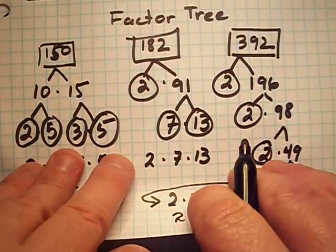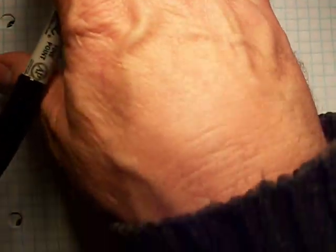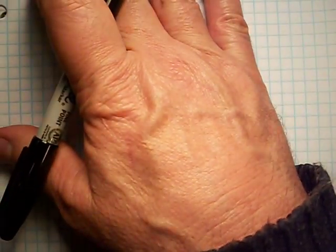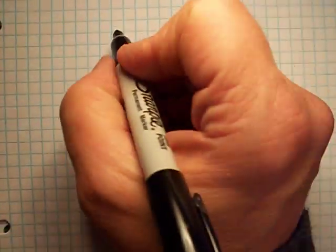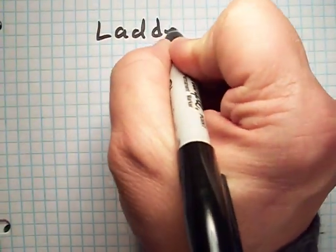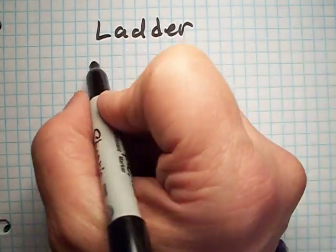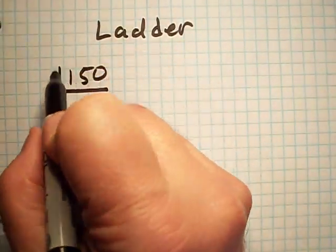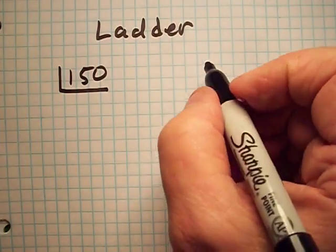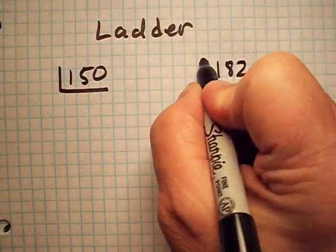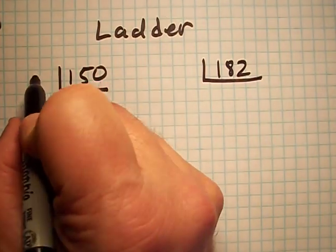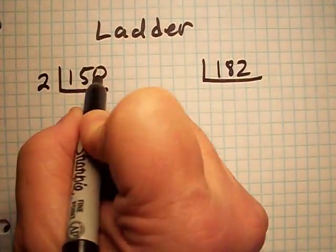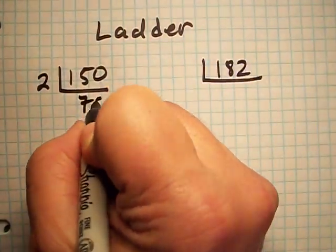There's another way to factor numbers — it's called the ladder. Just like a ladder, we're only going to do 2 numbers. Let's look at 150 again — put a little L around it — and let's look at 182. If you can, start off with a prime number. 2 will go into 150 75 times.